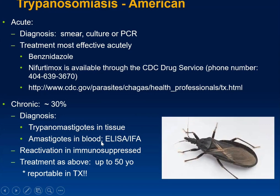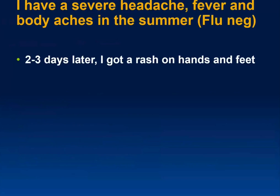In tissue, you look for trypomastigotes; amastigotes are found in blood — which is what screening tries to detect to prevent Chagas disease transmission via transfusion. Patients who've had Chagas disease can have it become inactivated, but if they become immunosuppressed, it can reactivate. Chagas disease is reportable in Texas. Treatment is either benznidazole or nifurtimox.